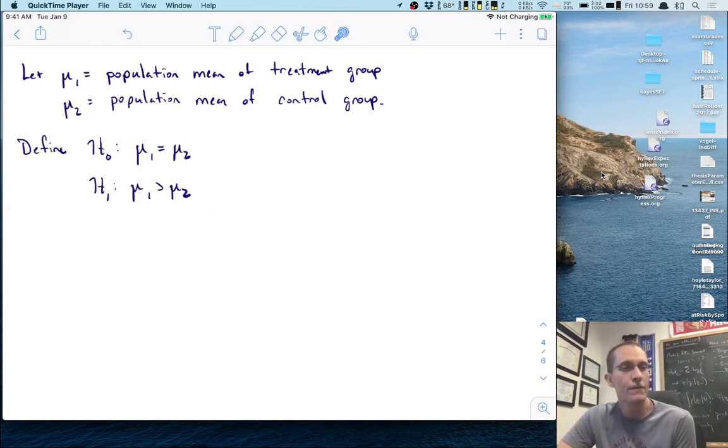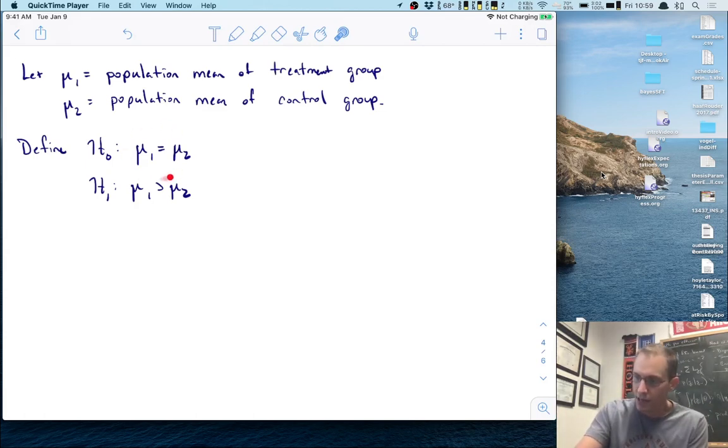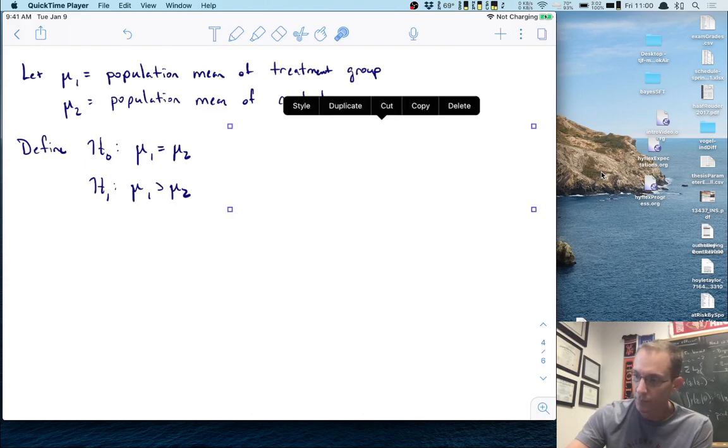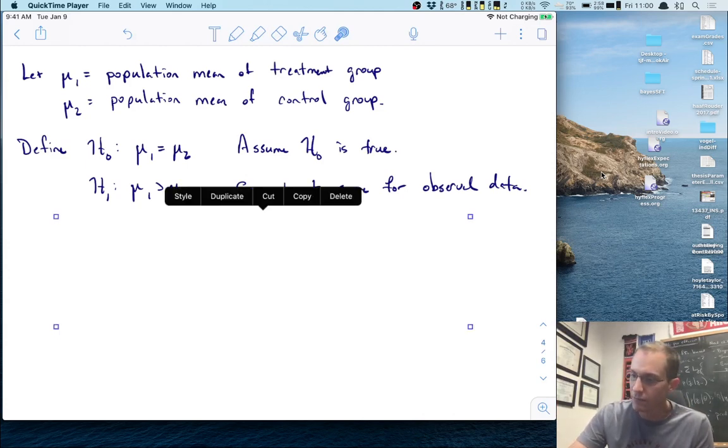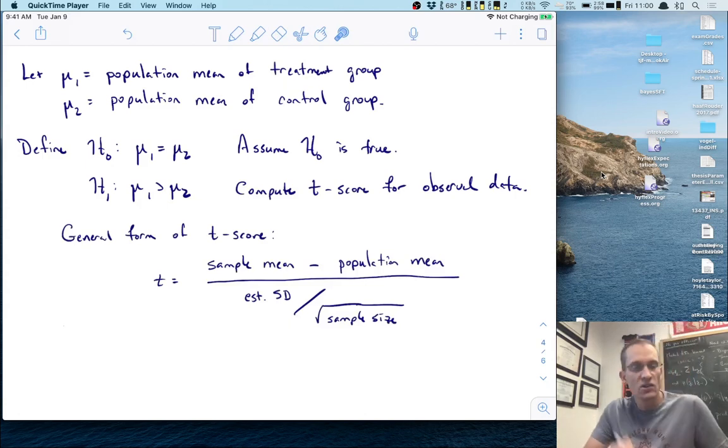For the independent samples t-test, the null hypothesis is that there's no difference between the two groups - mu one equals mu two. The research question was does the treatment group have higher scores, so our alternative would be mu one greater than mu two. We assume the null is true and compute the t-score for our observed data.